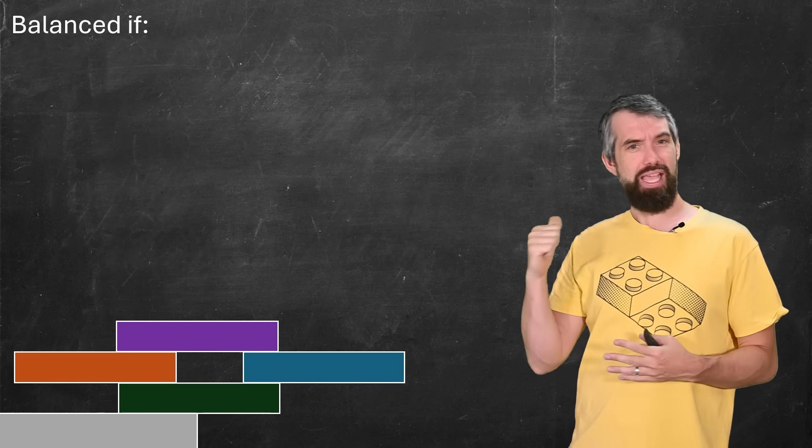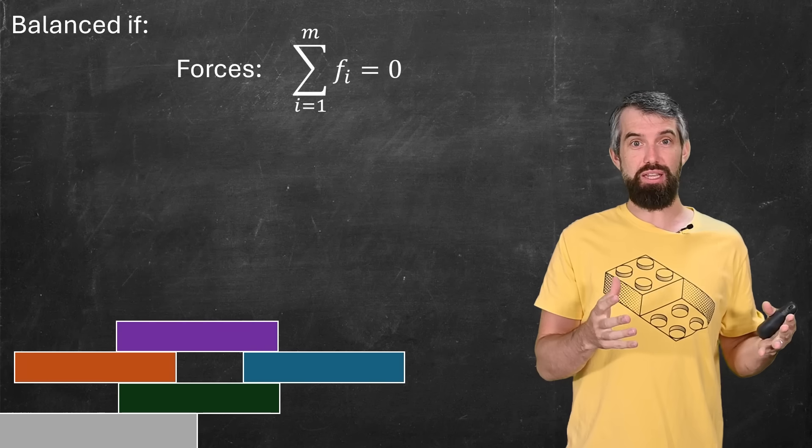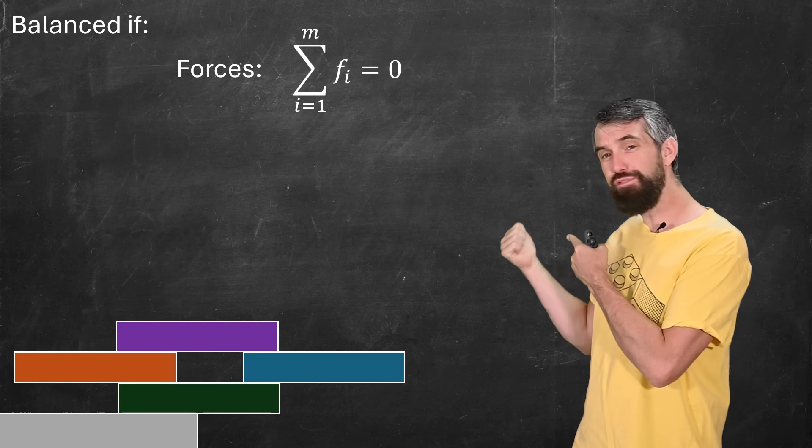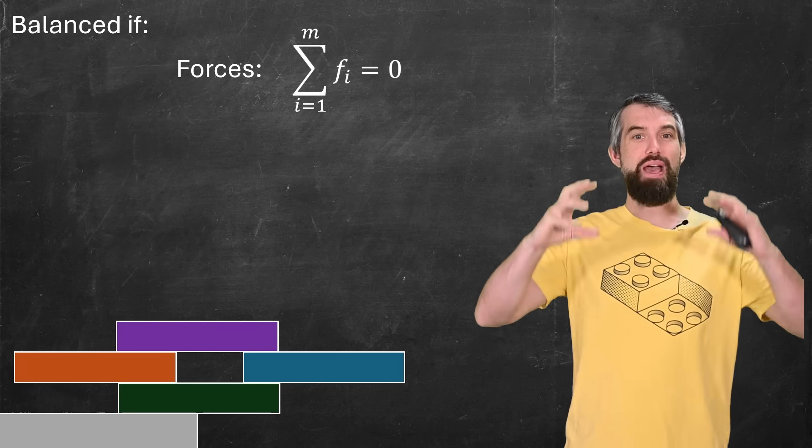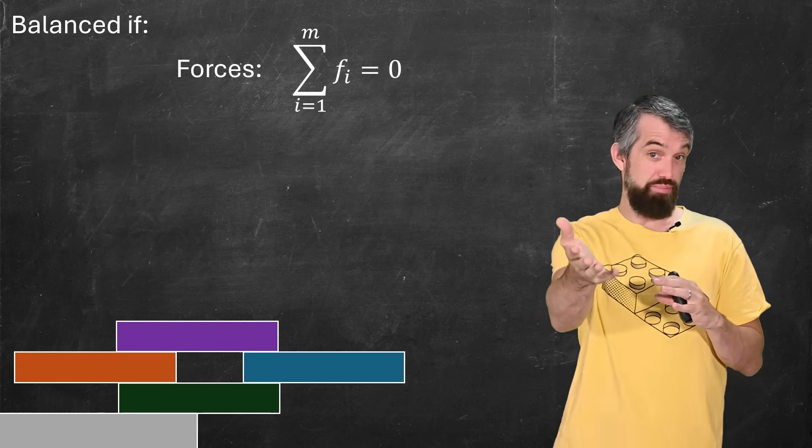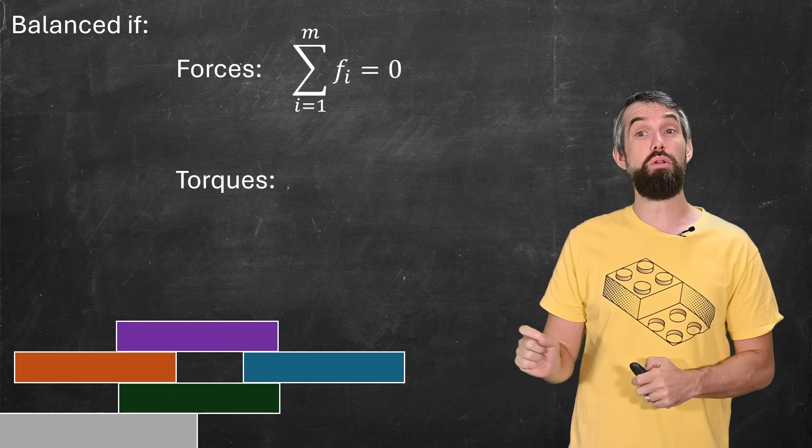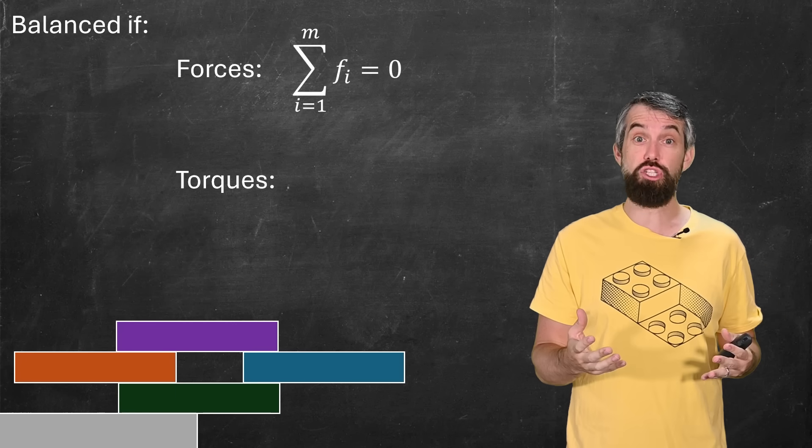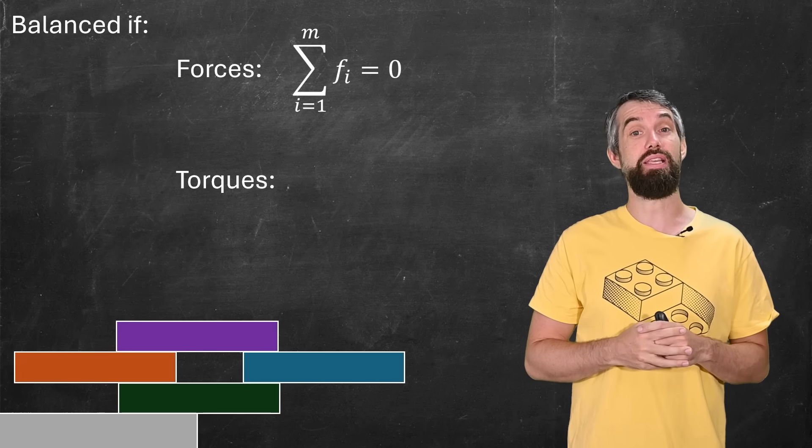So a stack is going to be balanced then if, well, two things are true. The first is that for any block, all of the forces that apply on that block have to add up to zero. Otherwise, the block would have a tendency to move up or down. That would not be balanced. But adding up the forces is not enough. You also have to add up the torques. We need to make sure there's no tendency to rotate clockwise or counterclockwise for any given block.